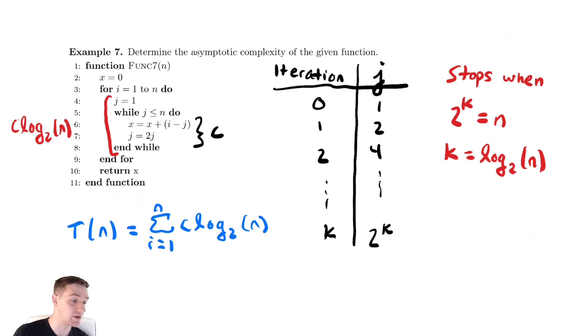And now, that's a very easy summation because our summation index, i, does not appear inside of the summation. We're adding up a fixed thing, c log base 2 of n, a fixed number of times, n times.